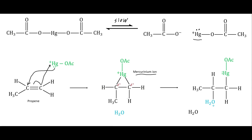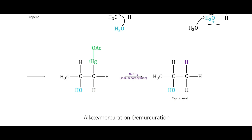One of these carbons is a secondary carbon and the other is a primary carbon. They both carry partial positive charge, but the secondary carries more of it because it is more substituted and more stable with a positive charge. So when water comes in, it attacks the secondary carbon, pushing the electrons back onto the mercury. Another water comes in and takes a hydrogen, forming the alcohol group.